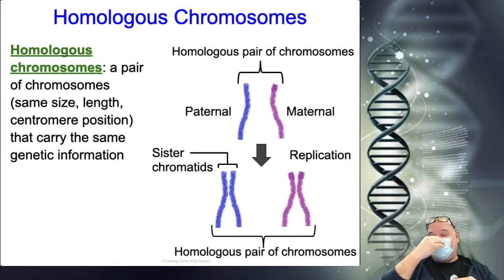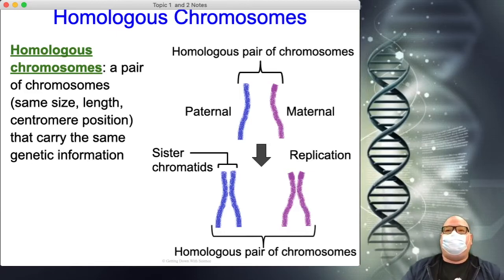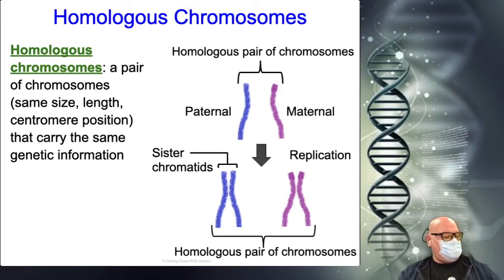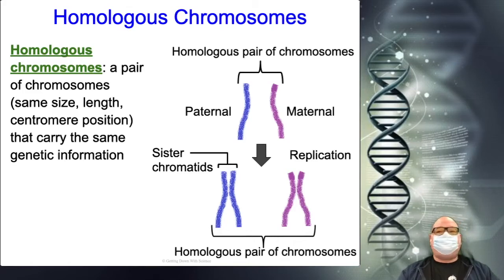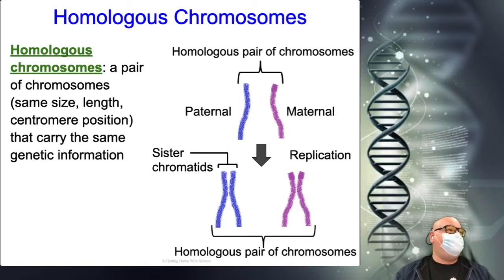So homologous pairs are the same size and carry information in the same locations, but the information itself may differ. You can think of them as two different driver's licenses — all the info is in the same place but the info is different. They carry the same categories of genetic information, just not the exact same data.